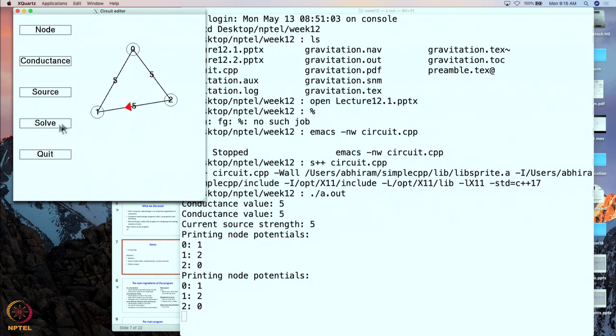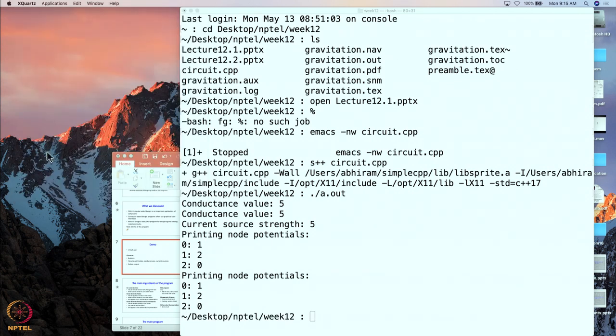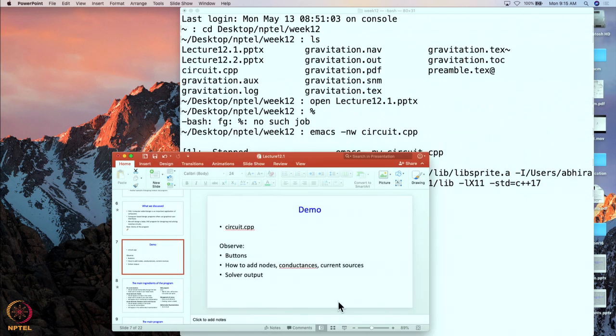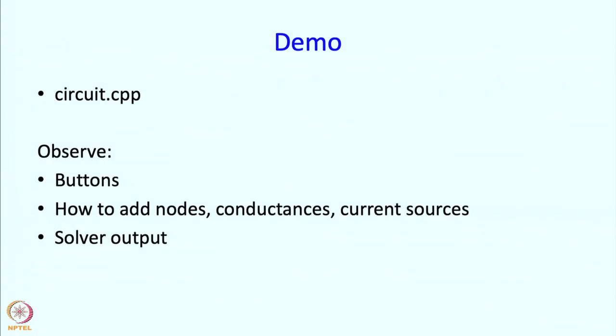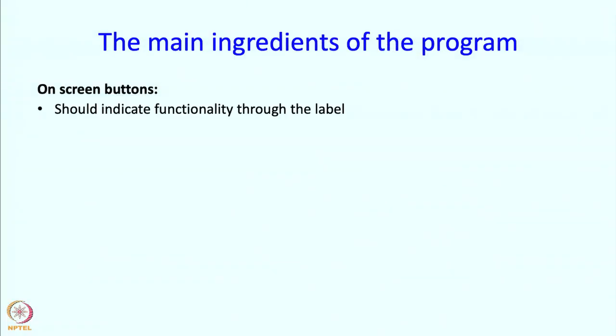At this point we can quit the program by pressing the quit button. Now let us go back to our presentation and continue. What are the main ingredients of the program? Well, the immediate ingredient is the on-screen buttons — each has a label indicating its functionality. This means our program needs code to decide whether the user clicked inside a button, and then take a certain action depending on which button was clicked.